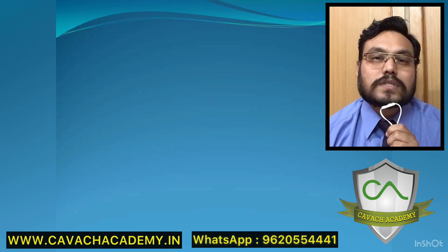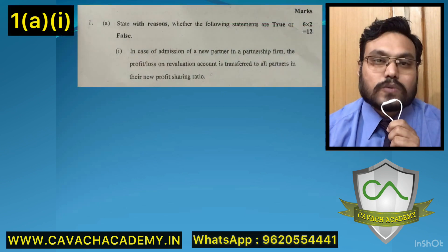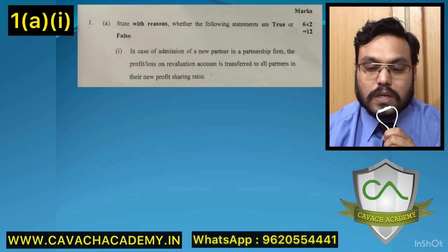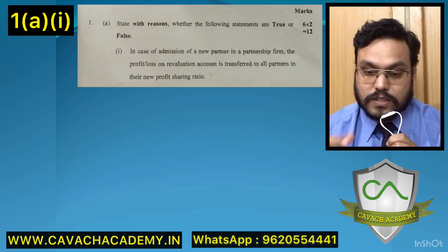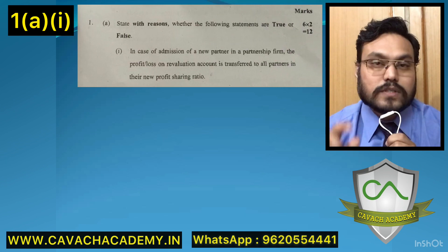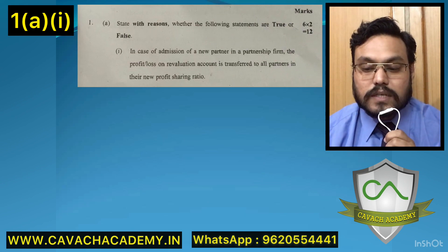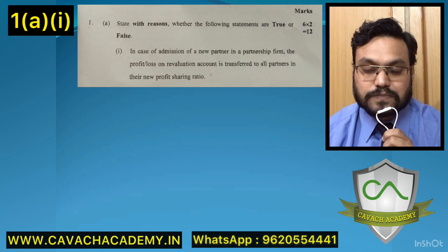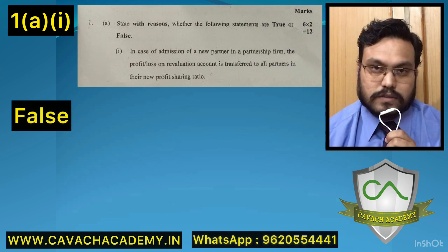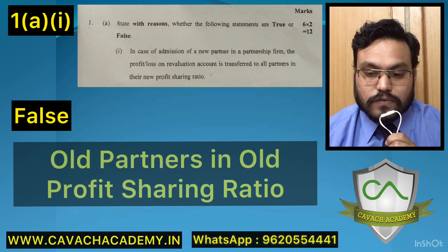Let's begin. Starting with question number 1a — December 2020 Accounts. Question 1a is about true and false, so I'll tell you the answer and the logic. First question: on admission of a new partner, the profit and loss and revaluation account is transferred to all partners in their new profit sharing ratio. The answer is FALSE.